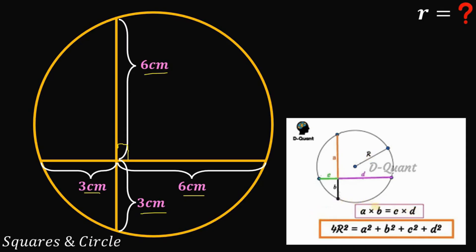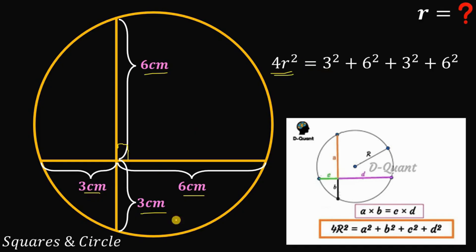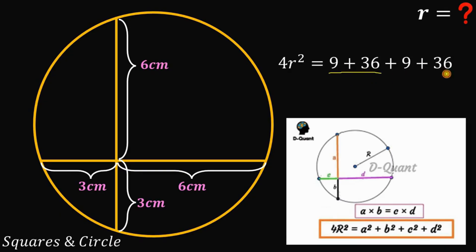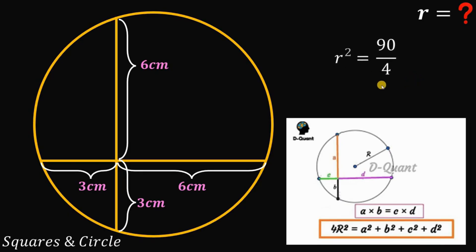We will have a video that proves this relationship, but for now let's apply it. We have 4r² equal to 3² plus 6² plus 3² plus 6². Now 3² is just 9, and 6² is just 36. So 9 plus 36 gives us 45, and 45 plus 45 gives us 90 on the right-hand side. Dividing both sides by 4 and taking the square root of both sides — since r is a length, we take only the positive value.